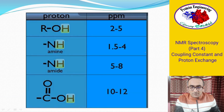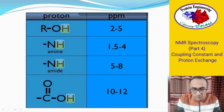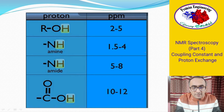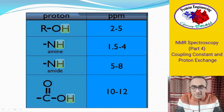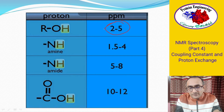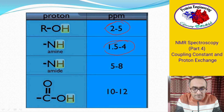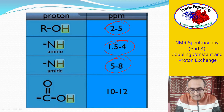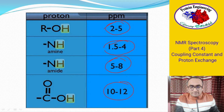For ROH groups, peaks are observed at 2–5 ppm; for amines at 1.5–4 ppm; for amides at 5–8 ppm; and for carboxylic acid OH groups the peak appears at 10–12 ppm.